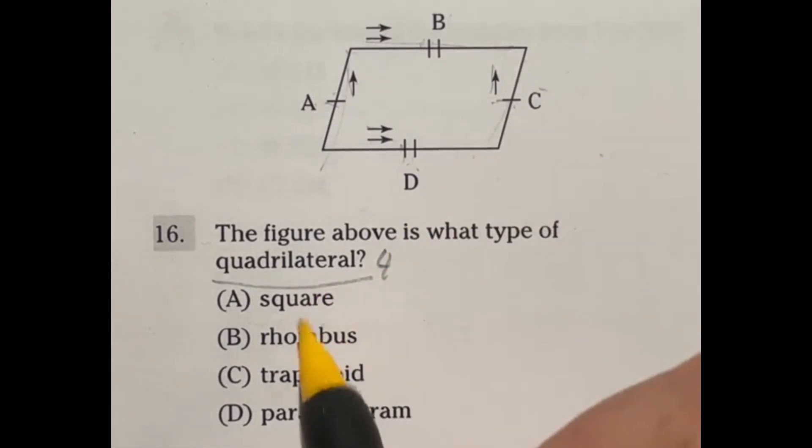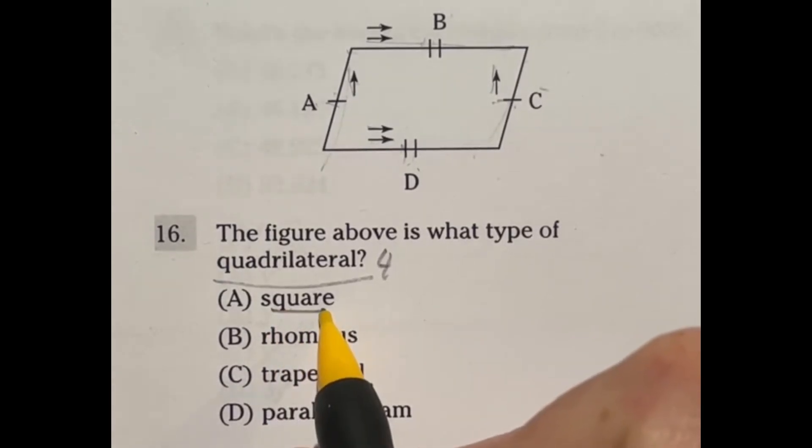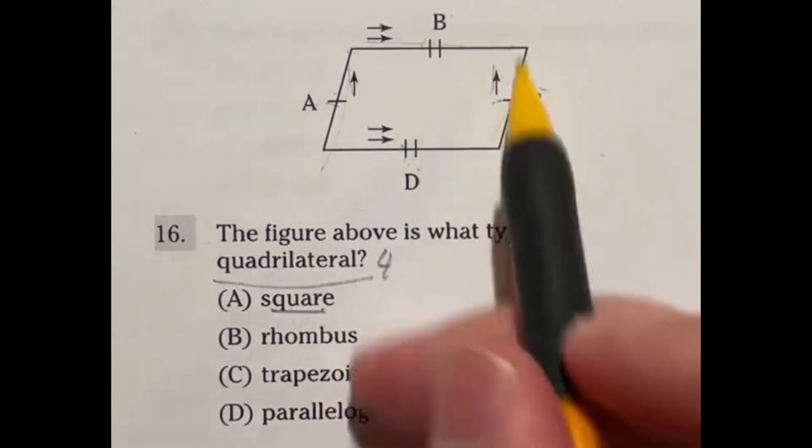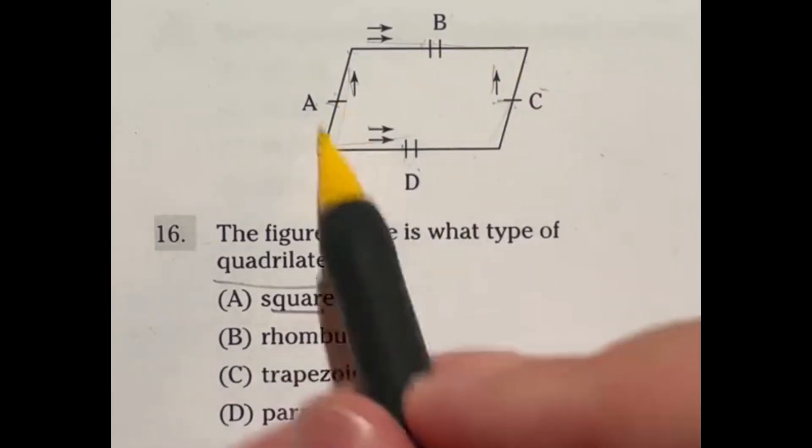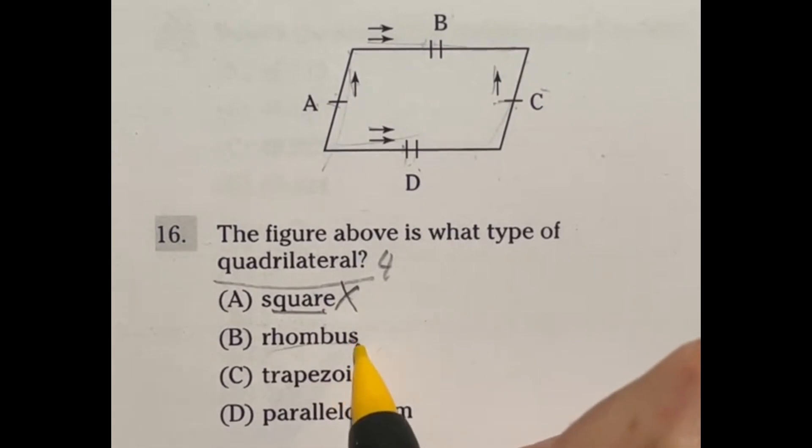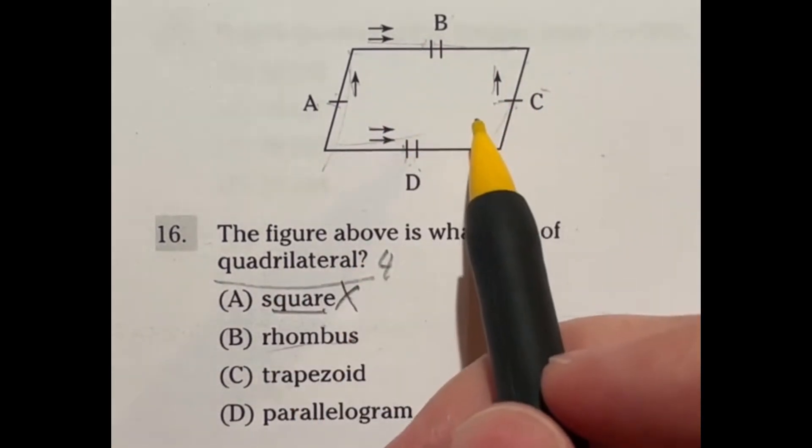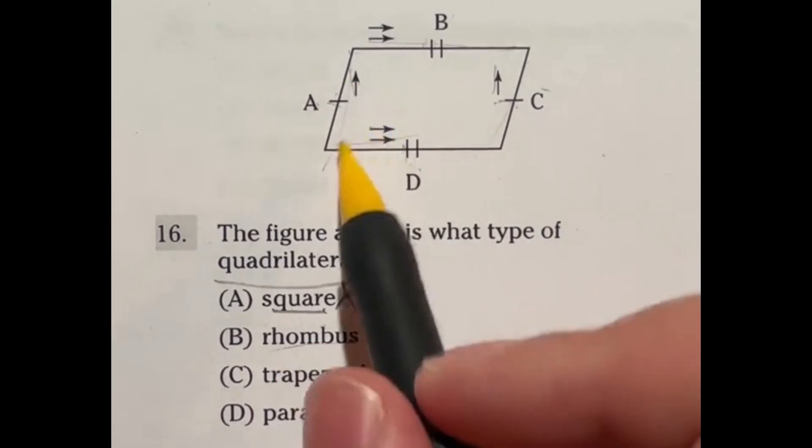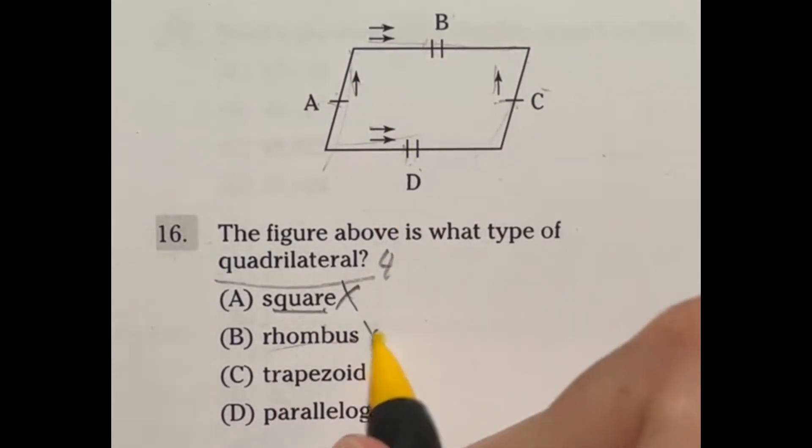So let's go ahead and go through these now. A square means that it's all four right angles and all sides are equal to each other in terms of length. We don't know how long these are, so we can't prove that it is a square. A rhombus means that all four sides have to be equal. Again, we don't know side lengths, so we can't figure that one out.